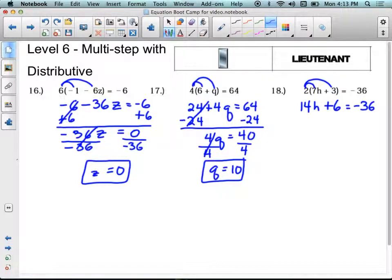This, again, is a two-step equation. 14h is the variable term plus 6 is the constant term. I'm going to subtract 6 from both sides and get 14h equals negative 42. At this point, I have 14 times h. To undo times, I divide. So I'll divide both sides by 14, and I'll get h equals negative 3.